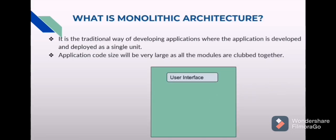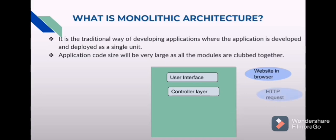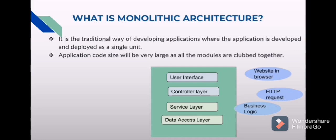Let's understand more about this by seeing the architecture diagram. First, the user interface — this is what the user sees in the browser. Then the controller layer — after going to that site, the user will do some operations, so all those operations will come as HTTP requests to this controller layer. Then the service layer, which consists of business logic for that application. Then the data access layer, which is used to connect to the database.